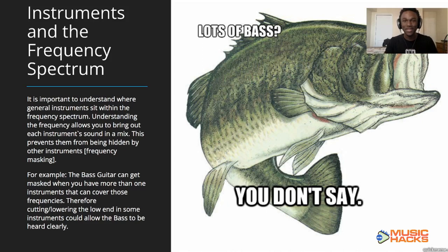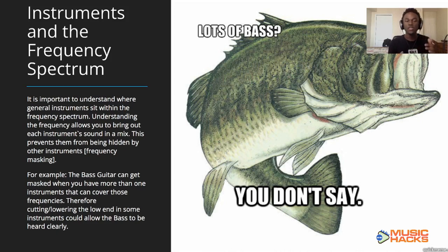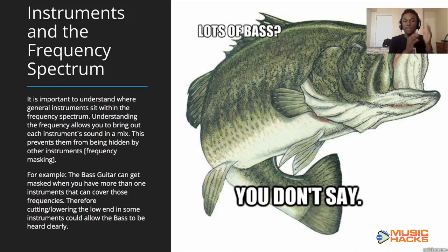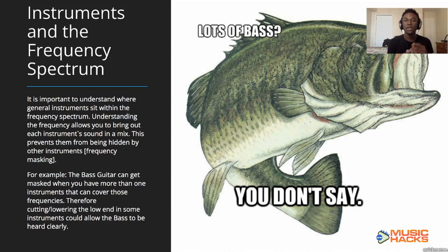So let's move on to how instruments operate in the frequency spectrum. It is important to understand where general instruments sit within the frequency spectrum. Understanding frequency allows you to bring out each instrument's specific characteristics in a mix. This prevents them from being hidden by other instruments, which is known as frequency masking. For example, a bass guitar can get masked when you have more than one instrument covering the lower frequencies.